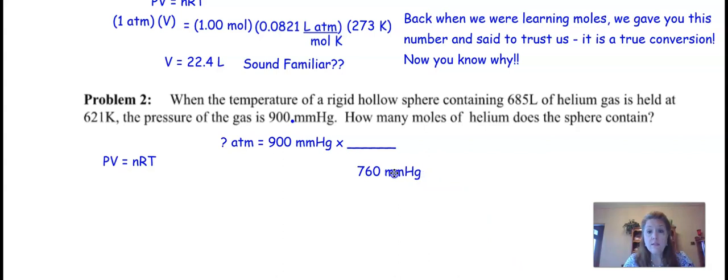Hopefully you remembered it was 760 millimeters of mercury and that would be 1 atm. I'm going to divide. So go ahead. What's 900 divided by 760? I got 1.18 atm. So now I'm ready to start plugging these numbers, right?